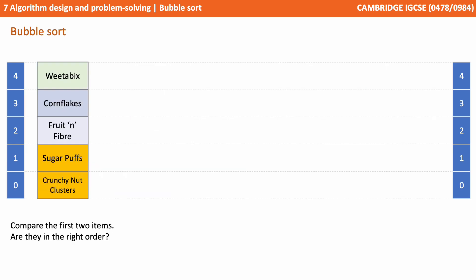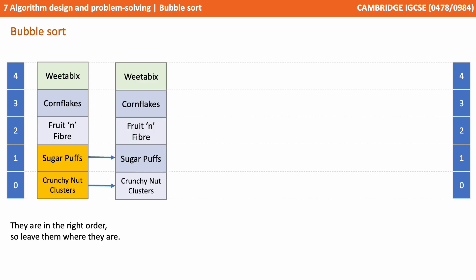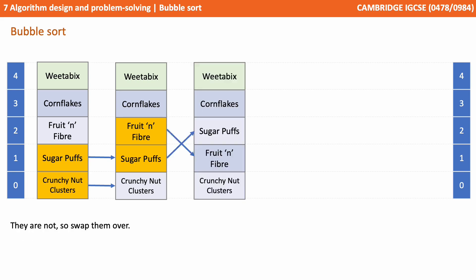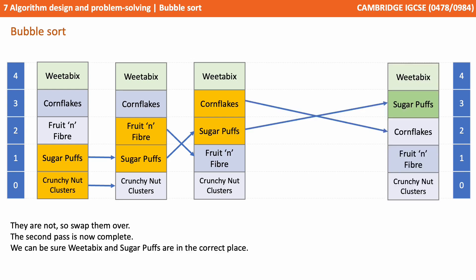We start a second pass and compare the first two items — they are in the right order, so we leave them where they are. We compare the next two items — they're not in the right order, so we swap them over. We compare the next two items — they're not in the right order, so we swap them over. Notice how we didn't have to look at the top item Weetabix and compare it to anything, as we'd already determined it had reached the correct place. The second pass is now complete, so we can be sure that Weetabix and Sugar Puffs are in the correct place.